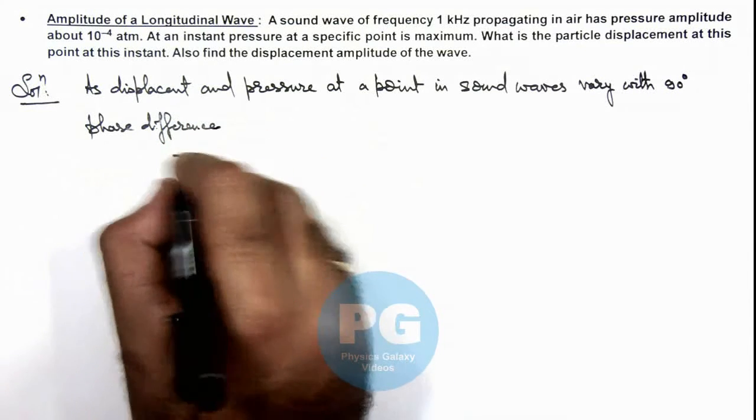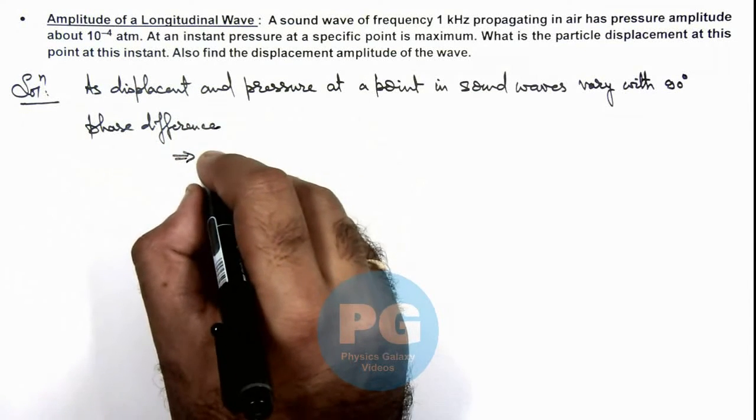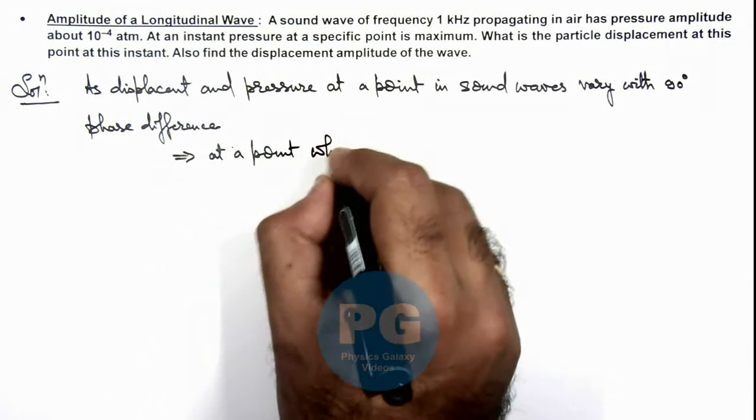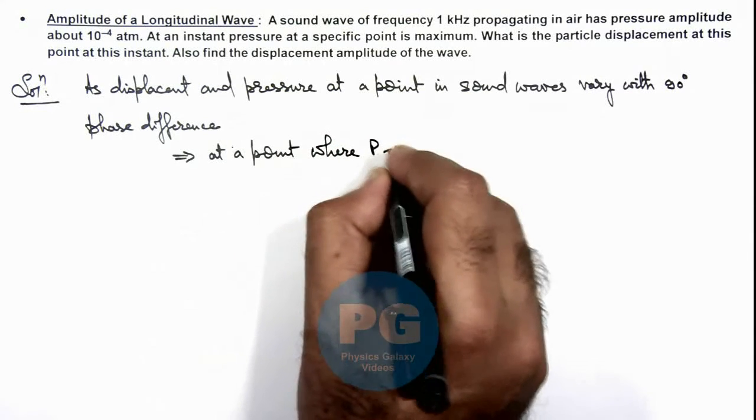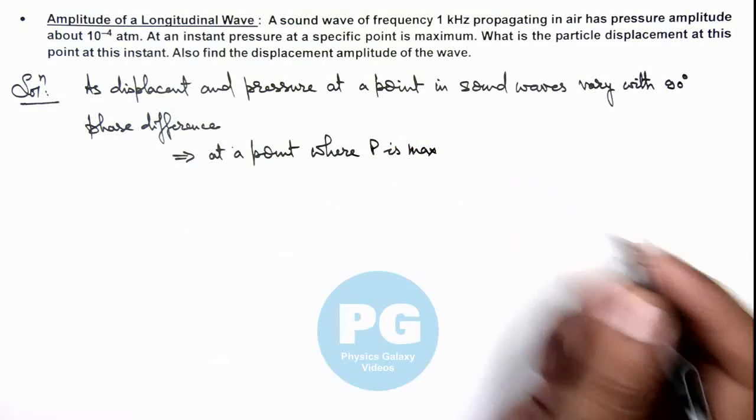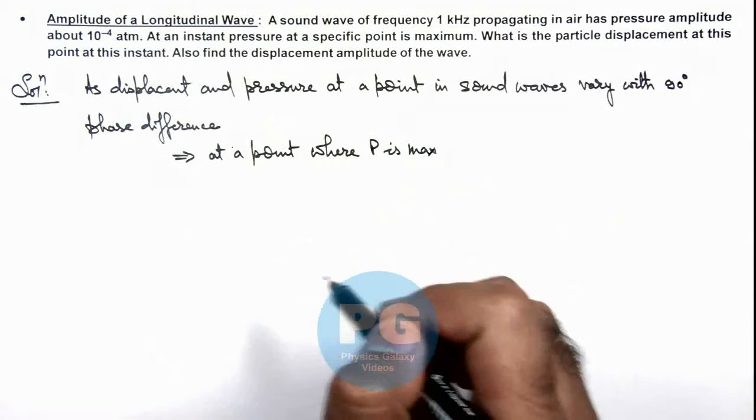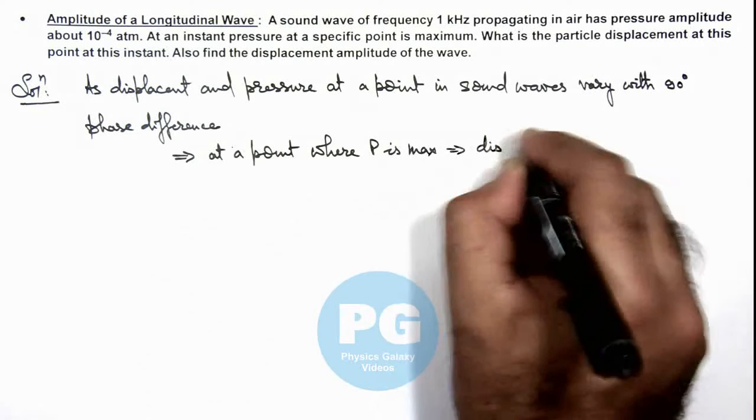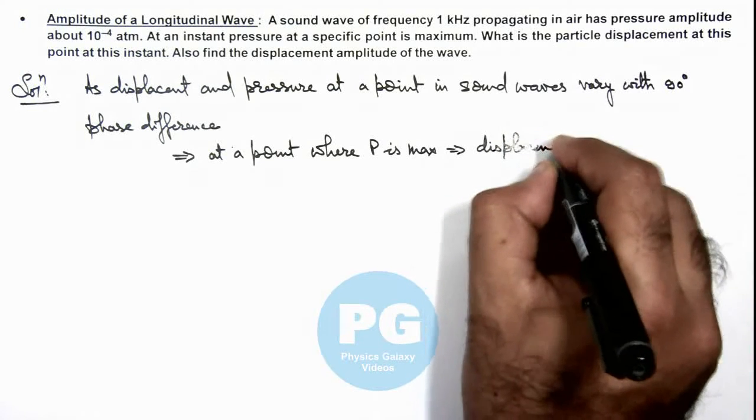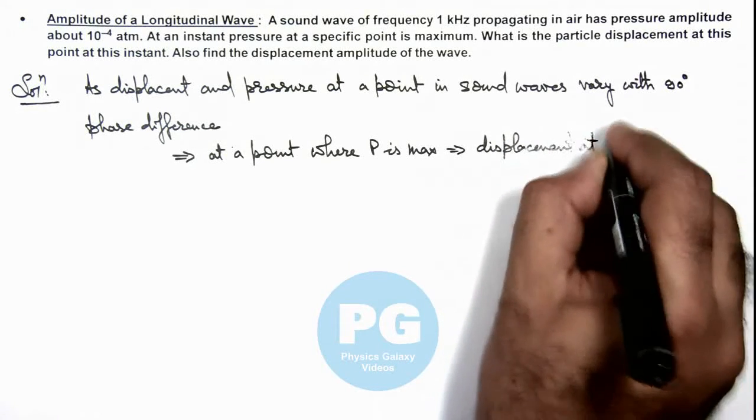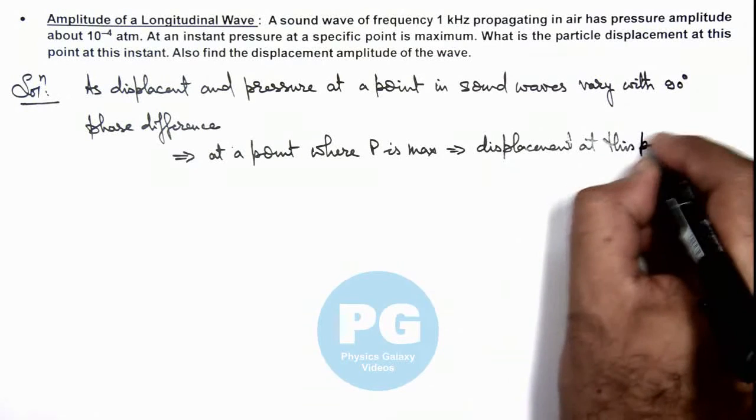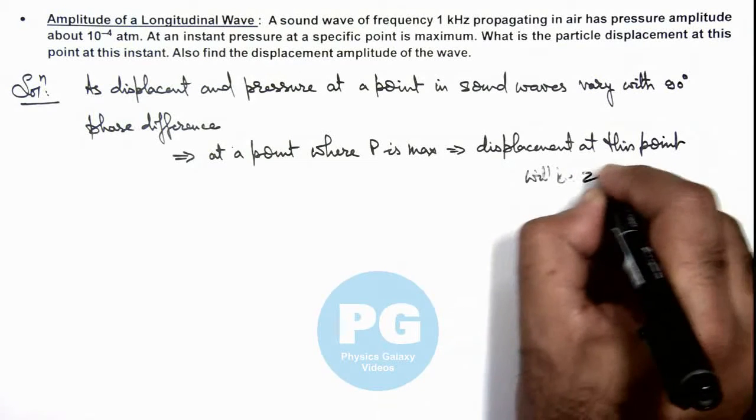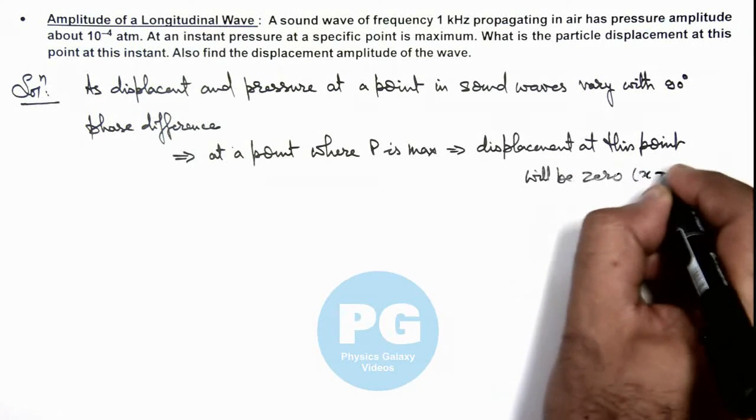This implies at a point where p is maximum, and as these are sinusoidal variations, if p is maximum, this implies displacement at this point will be zero. Here we can write x equals zero.